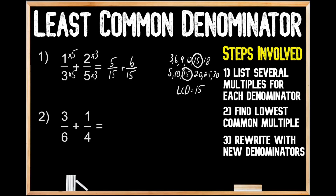Now let's try the same thing for question number two. We have three-sixths plus one-fourth. The first step is to list several multiples for each denominator. Multiples of six: six, twelve, eighteen, twenty-four, thirty, and thirty-six. Multiples of four: four, eight, and twelve. We'll stop there because we've already found the lowest common multiple — twelve is a multiple of both six and four. So our least common denominator for six and four is twelve.